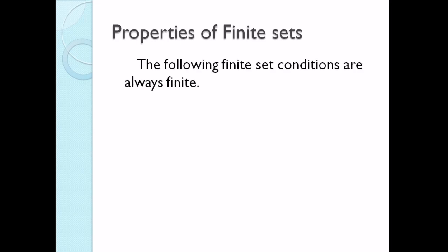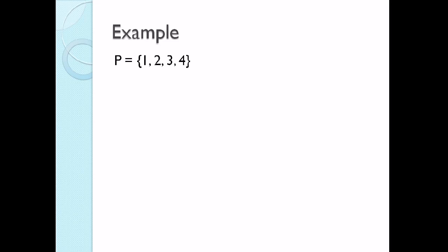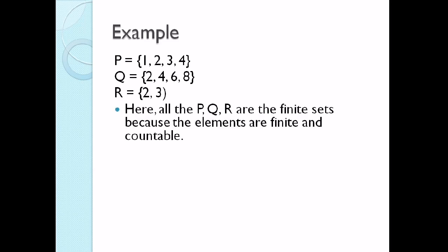Let's talk about the properties of a finite set. The following finite set conditions are always finite: a subset of a finite set, the union of two finite sets, and the power set of a finite set. Given set P = {1, 2, 3, 4}, set Q = {2, 4, 6, 8}, and set R = {2, 3} — all are finite sets because the elements are finite and countable. Set P has 4 elements, set Q has 4 elements, and set R has 2 elements.